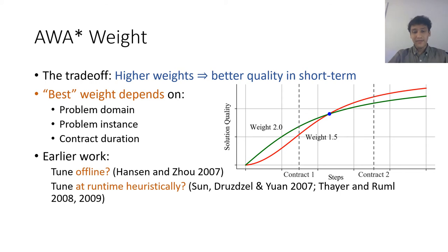Earlier work has tried to find a best static weight offline or has aimed to tune the weight dynamically at runtime based on certain heuristic principles like decreasing the weight after every solution is found. In this work, we apply our decision theoretic technique to adjust the weight at runtime using deep reinforcement learning.